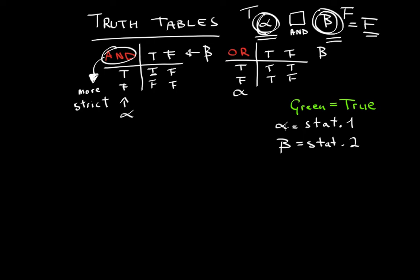Then the only way that an OR statement could be false is if both alpha, my first statement, and beta, my second statement, are false. If both of them are false, that's the only way that the overall truth of the statement can be false.